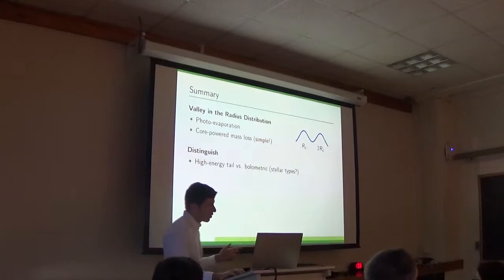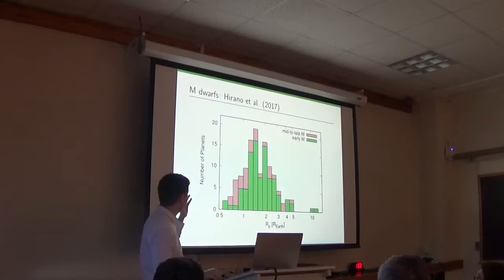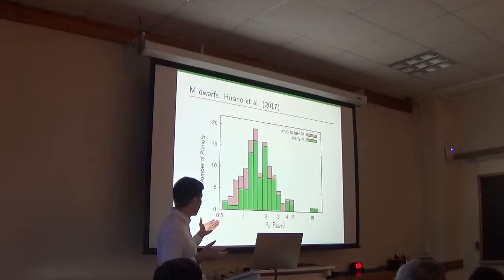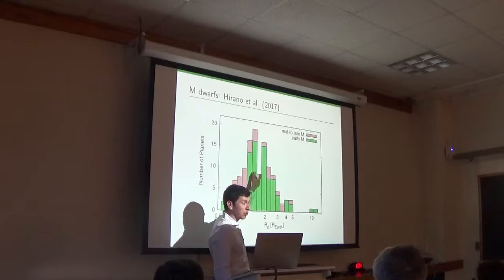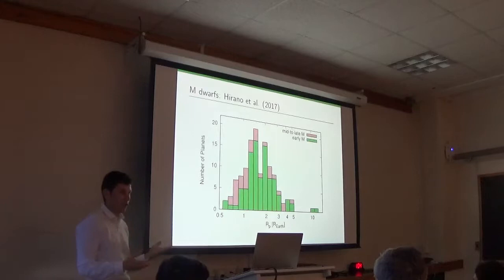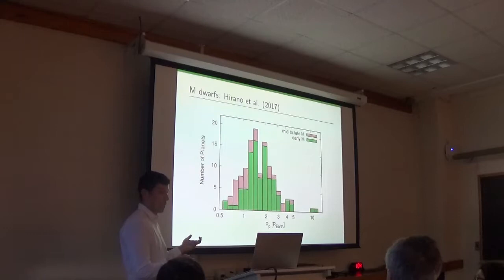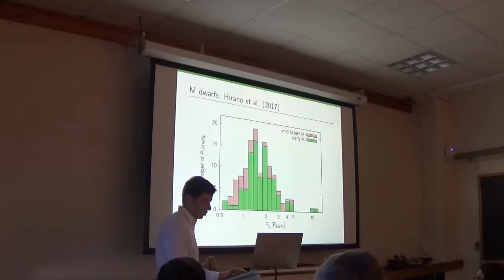So photoevaporation relies on the high energy tail of the star's luminosity, only the ionizing photons. Whereas the core cooling correlates with the planet's equilibrium temperature, and therefore with the bolometric luminosity of the star. And the ratio between these two is different between different stellar types. So I'm suggesting to plot to see how the valley looks like for different stellar types. And actually, if I have more time, I have more time. So actually, I came and posted this paper from the archive from about two days ago. Well, people actually did this.